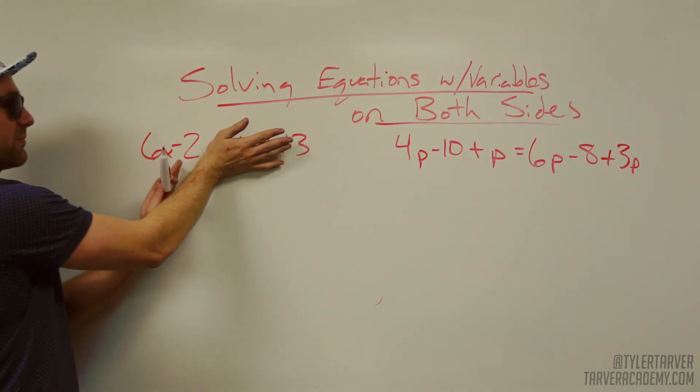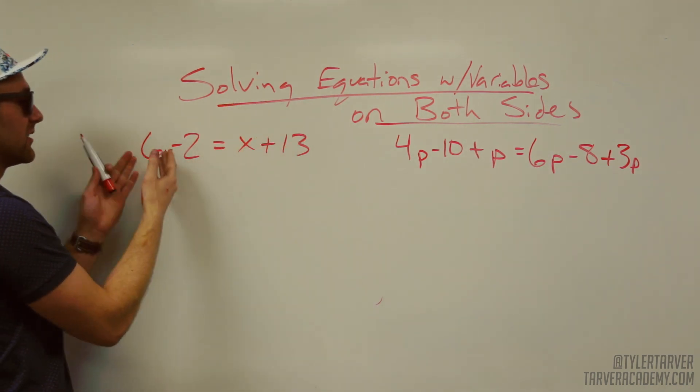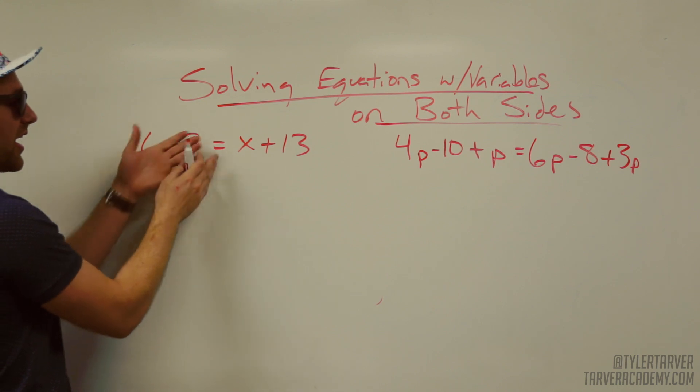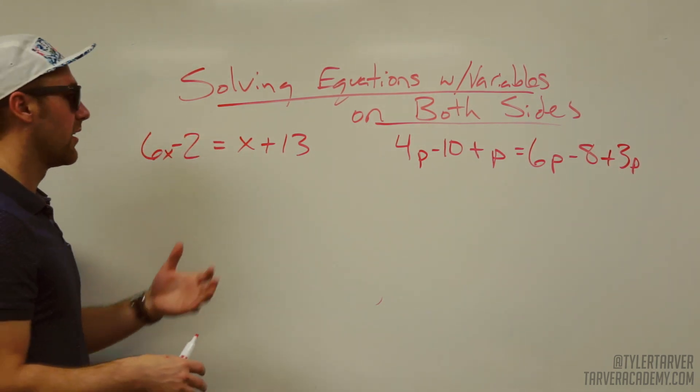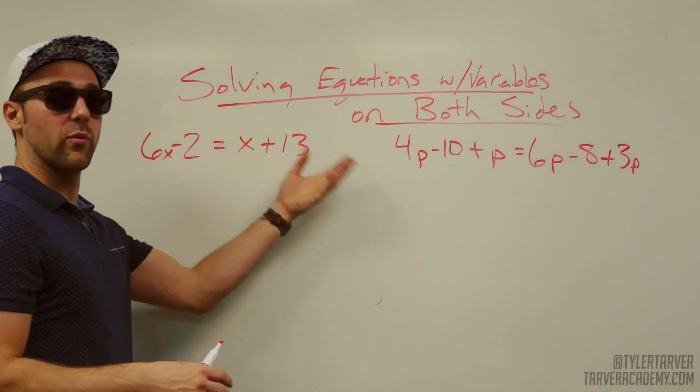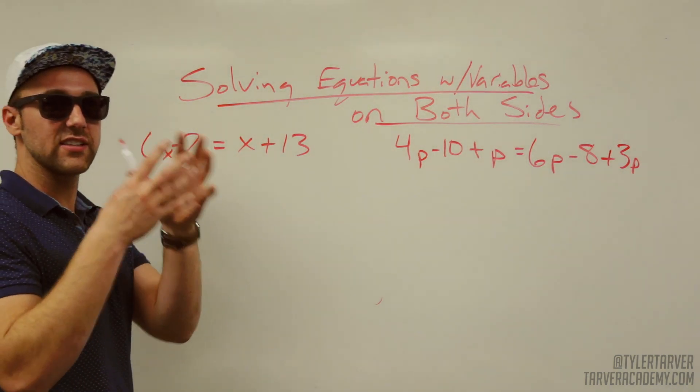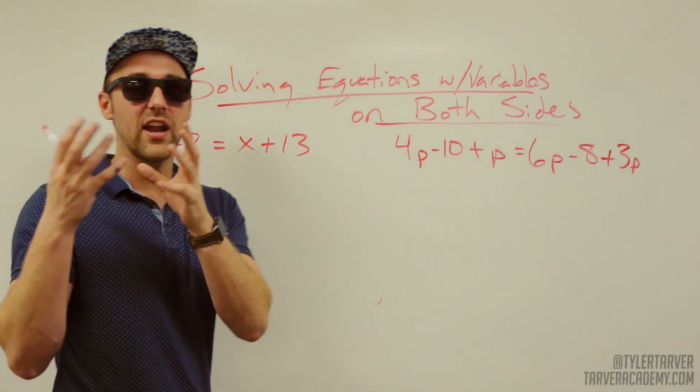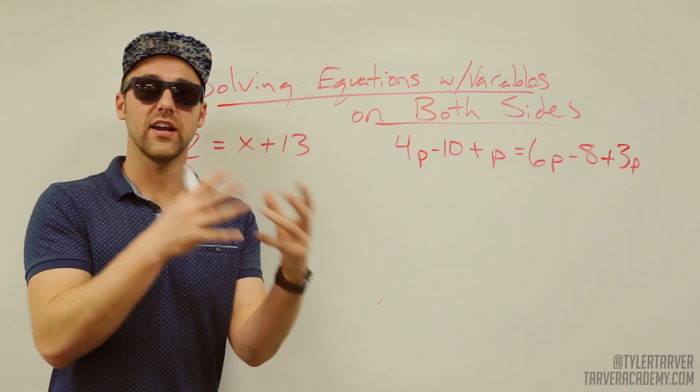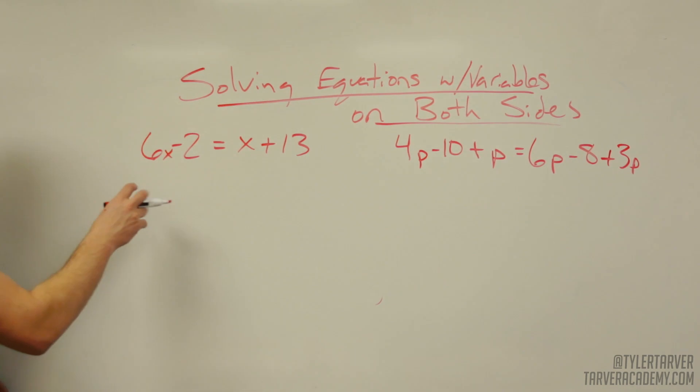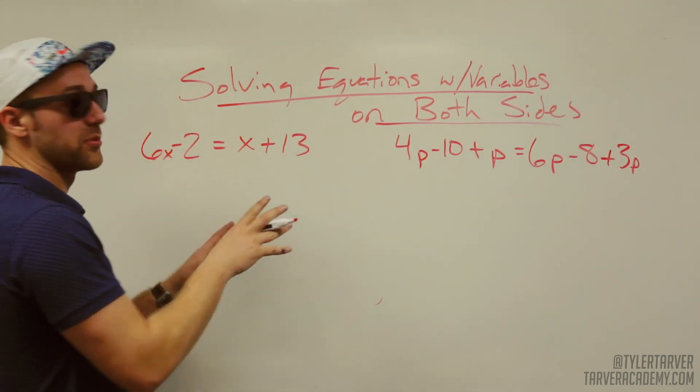Is there anything to simplify here? 6x minus 2? No, because they both don't have a variable, so you can't. Can you simplify this? x plus 13? No, you can't, because one is a variable and one doesn't. You can't add or subtract unless they have the same type of variable. Like even 2x plus 2x squared, you can't because you've got an x and you've got an x squared. So, let's get our x's to the same side and our numbers to the same side.